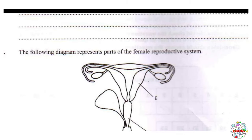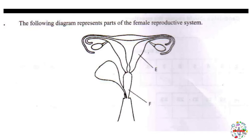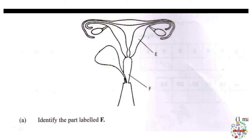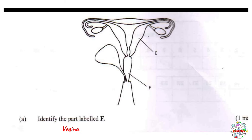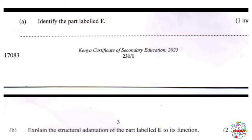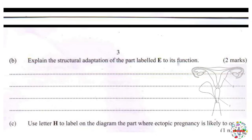Moving on to part 3: the following diagram represents parts of the female reproductive system. Part A: identify the part labeled F. If we look at part F, we can see that this is the vagina. Part B: explain the structural adaptation of the part labeled E to its function. Part E represents the uterus.